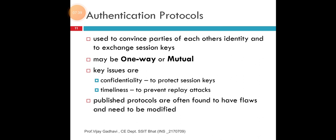There are digital signature standards, with the federal information processing standard specifying the suite of algorithms that can be used to generate a digital signature. It was established by the United States National Institute of Standards and Technology in 1994. Four revisions to the initial specification have been released. It defines a digital signature algorithm and contains a definition of RSA signatures based on the definition contained within PKCS. PKCS is the first of the family of standards called the Public Key Cryptography Standards, published by RSA Laboratories.